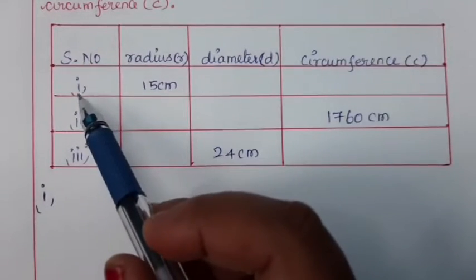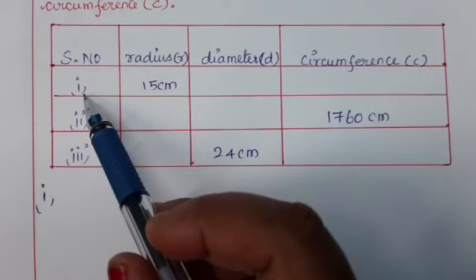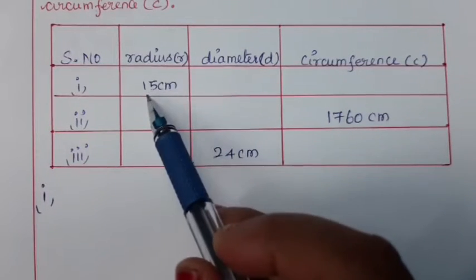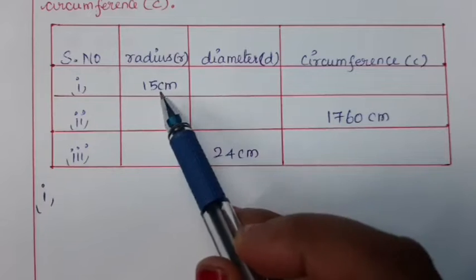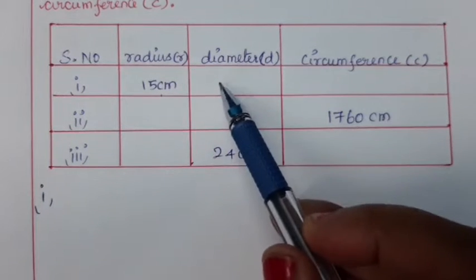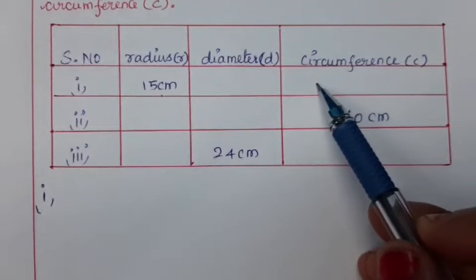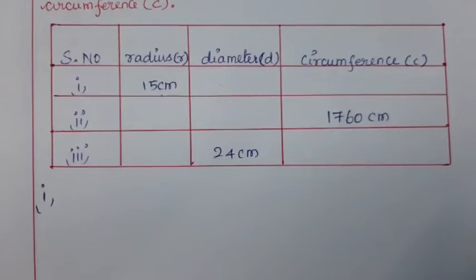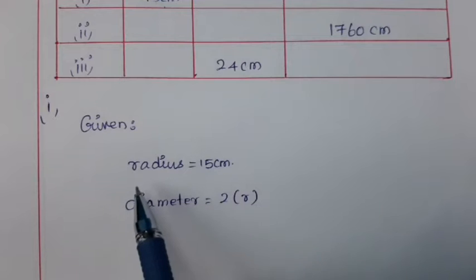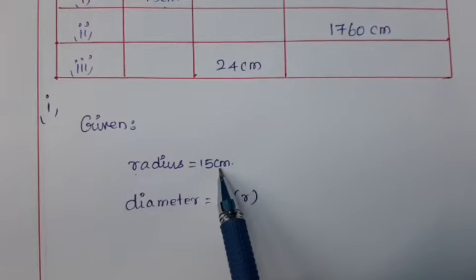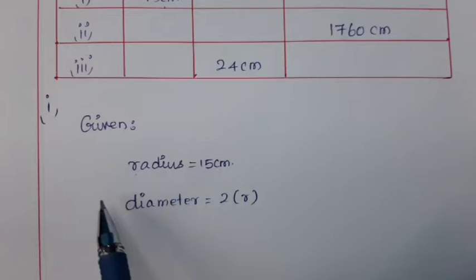Now let us find the answer for the first subdivision. For the first subdivision, the given radius r is equal to 15 cm. They are asking us to find the diameter and the circumference of the circle. So by the given question, radius is equal to 15 cm. At first we are going to find the diameter.